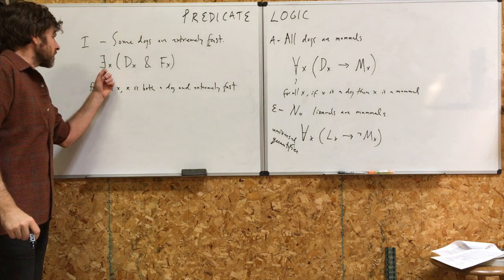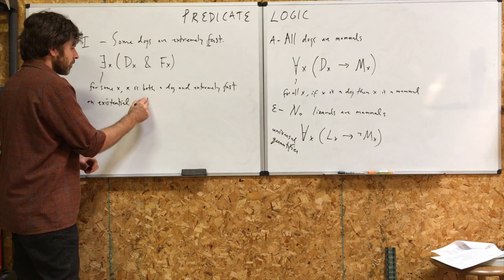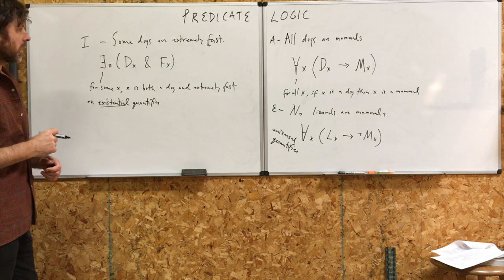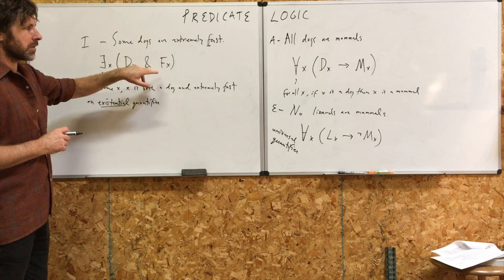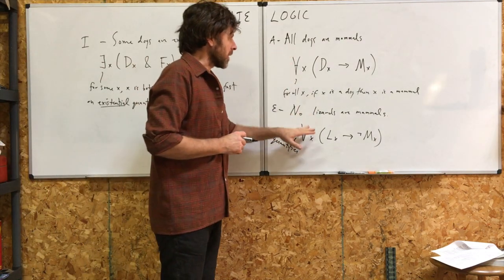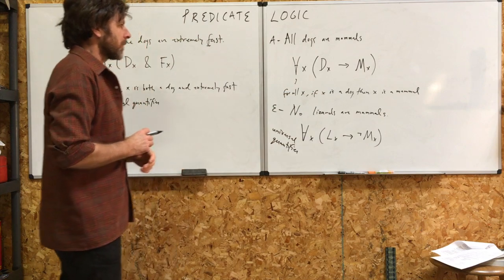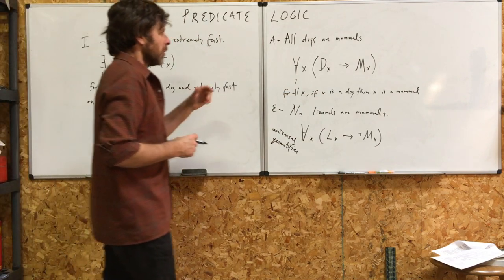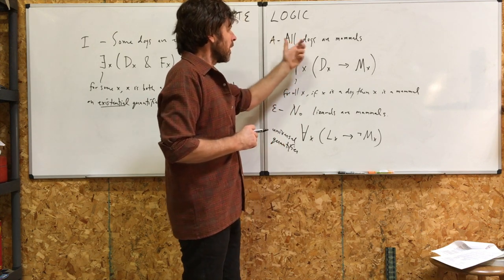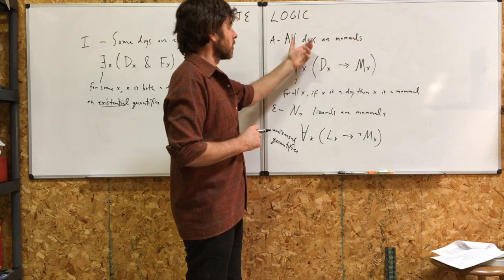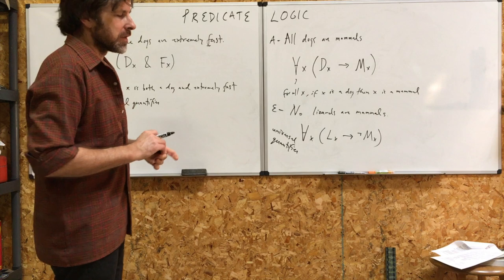This is called an existential quantifier. You're making an existence claim — you're saying there's at least one thing in the universe that is a dog and extremely fast. Universal quantifiers do not automatically make existence claims. When you say 'for all X, if X is a dog,' you're not saying there are actually any dogs — you're not committed to that. For example, I could say 'all unicorns are magical': for all X, if X is a unicorn then it's magical — but I'm not committed to the existence of unicorns.